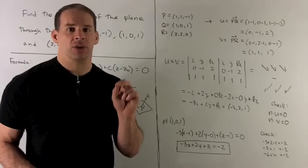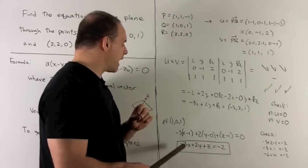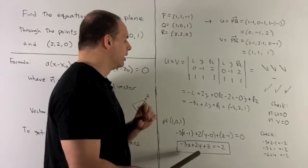And then I have to check (2, 2, 0). I put 2, 2, 0 in here. I get -6 + 4 gives me -2.